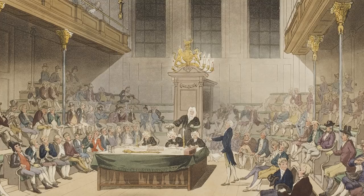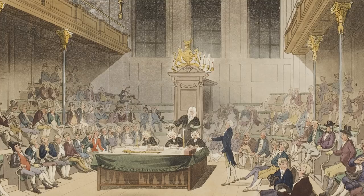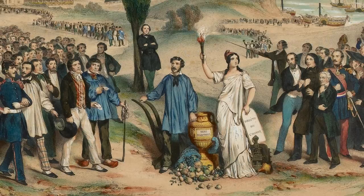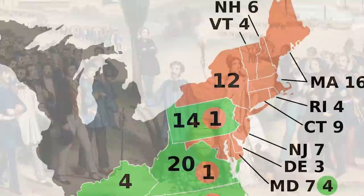The Federalists were pro-British and favored a powerful central government, while Jefferson's party were pro-French and favored strong states' rights. The election split along geographic lines, with Adams and the Federalists capturing the North, and Jefferson the Southern states plus Pennsylvania.